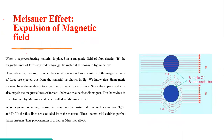Next is the Meissner effect — a very important property. The Meissner effect is simply the expulsion of magnetic field by a superconductor. When a superconductor is brought below its critical temperature, it becomes diamagnetic — it shows diamagnetic behavior. Let's see how we can prove this diamagnetic property.